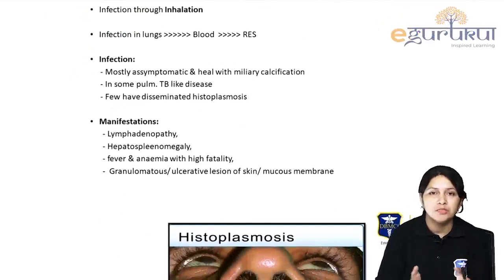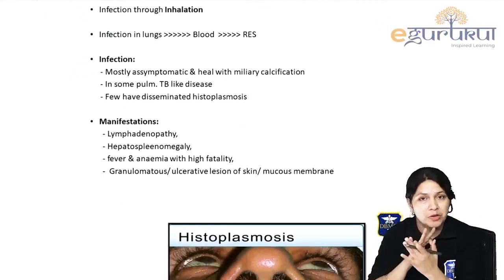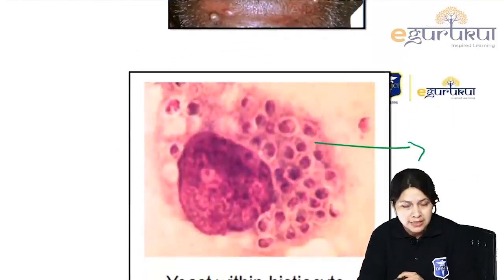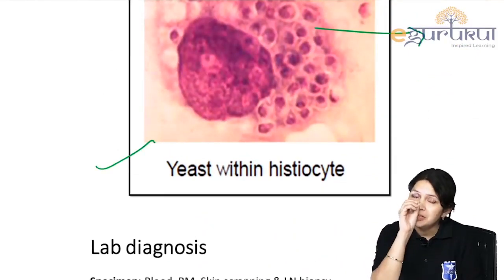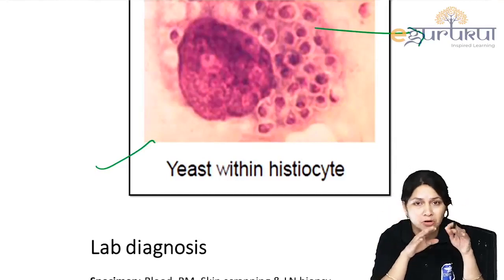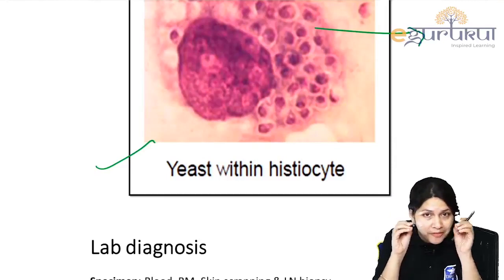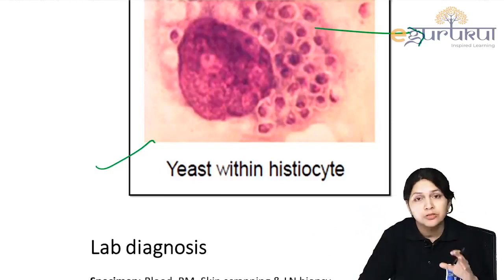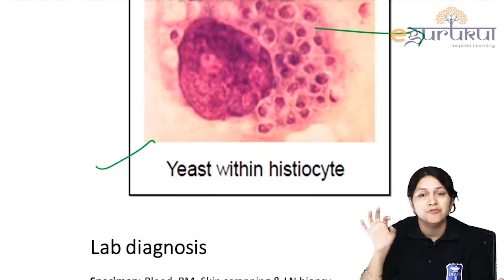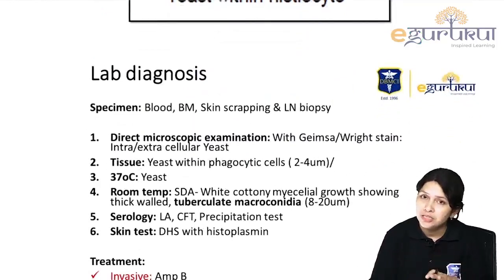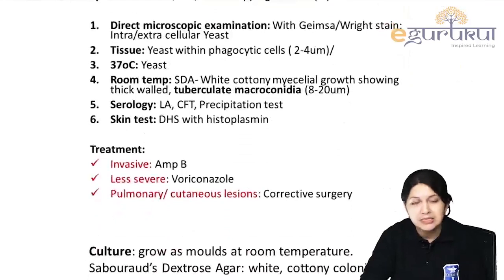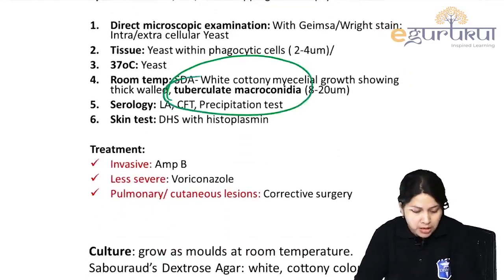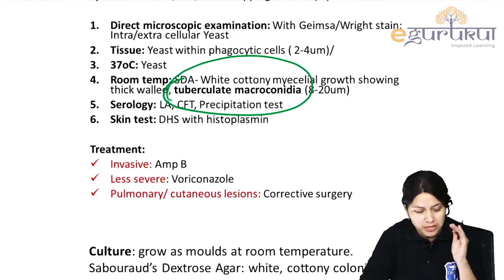Like all dimorphic fungi, infection is acquired by inhalation. Common presentations are pulmonary, systemic, and cutaneous. The classical finding is intracellular yeast within histiocytes — this is the catch-word pointing toward histoplasmosis. In culture at 25°C, we see microconidia and macroconidia — specifically classical tuberculate macroconidia, which is the characteristic feature of Histoplasma.